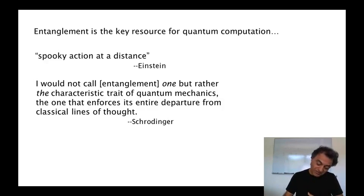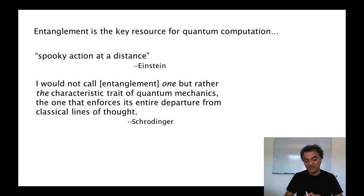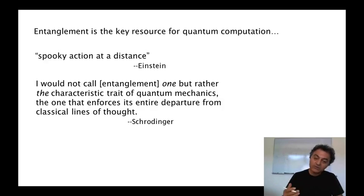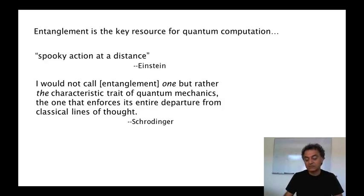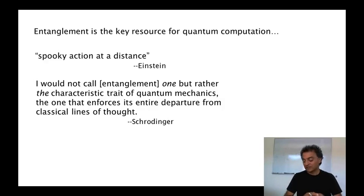Now, there's a quote from Erwin Schrodinger which I found very interesting. This is from the 1930s, where he already talked about — he says, 'I would not call entanglement one but rather the characteristic trait of quantum mechanics, the one that enforces its entire departure from classical lines of thought.' This is a remarkably modern viewpoint on entanglement.